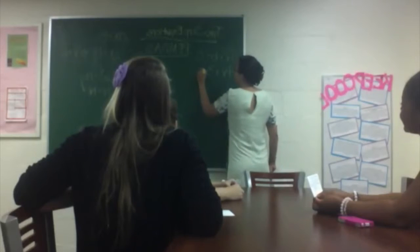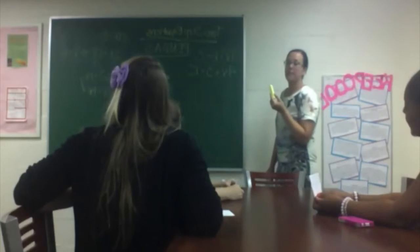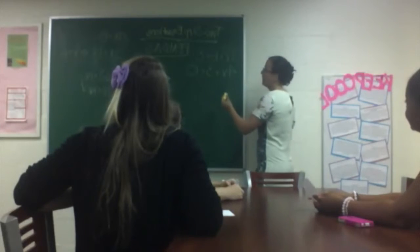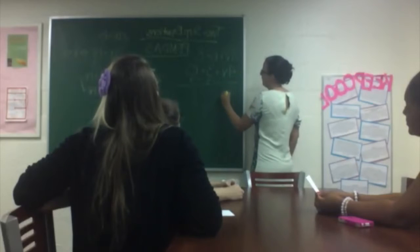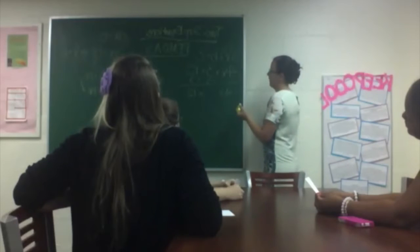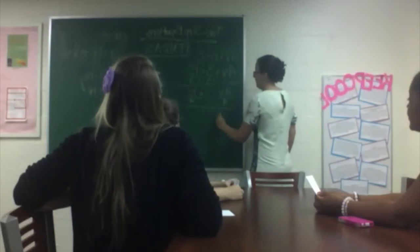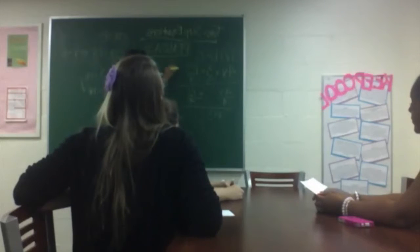4X plus 3 equals 15. We're going to do the inverse operations, which inverse means the opposite, right? So what are we going to do first here? We're going to subtract 3 — the inverse. And that leads us to 4X equals 12, then we divide by 4, and we get X equals 3. Substitute — we're going to use the original equation.